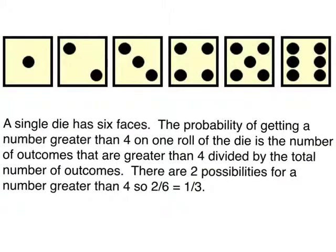On a die, a single die, you have 6 different faces, each with a different number, 1 through 6. Now, the probability of getting a number greater than 4 on one roll of this die is the number of outcomes that are greater than 4 divided by the total number of outcomes. Well, the total number of outcomes greater than 4, let's see, there's only 2, 5 and 6.